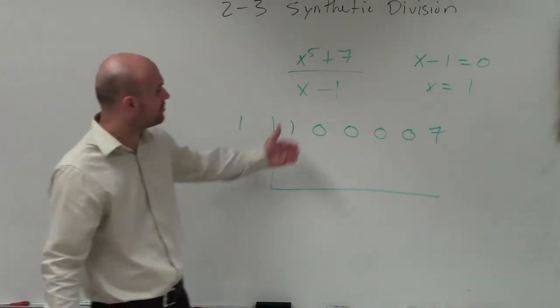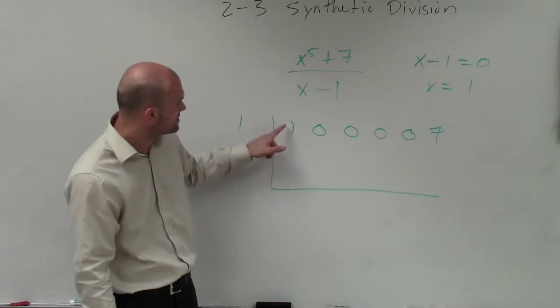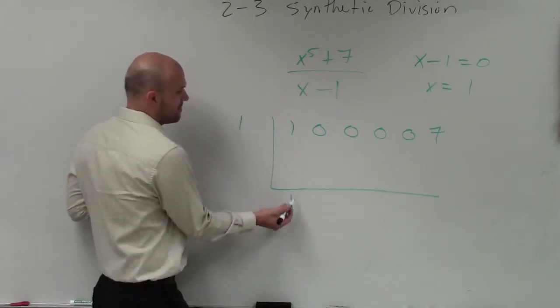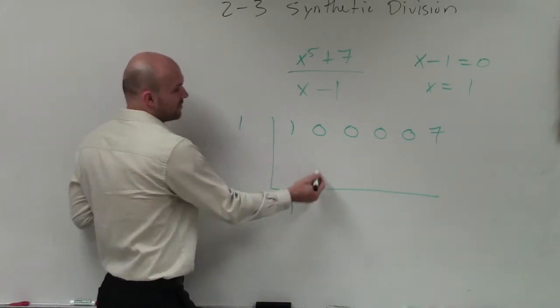So now to finish the problem, to apply synthetic division, what we need to do is first we drop down to one, then we do multiply across, one times one is one, zero plus one is one.